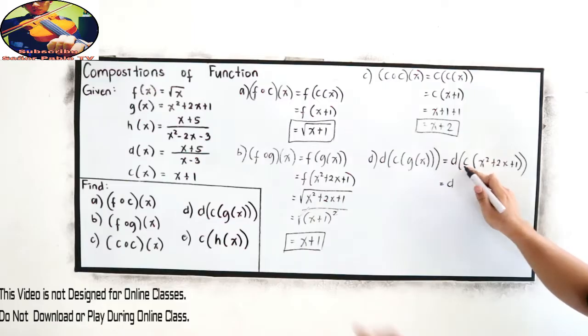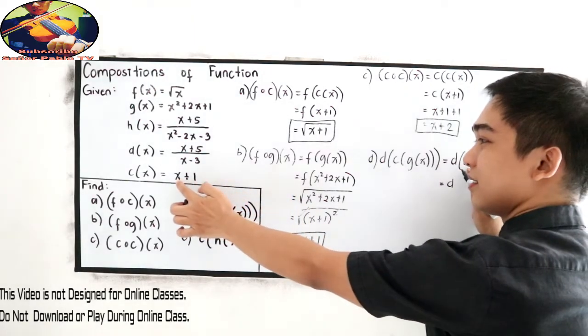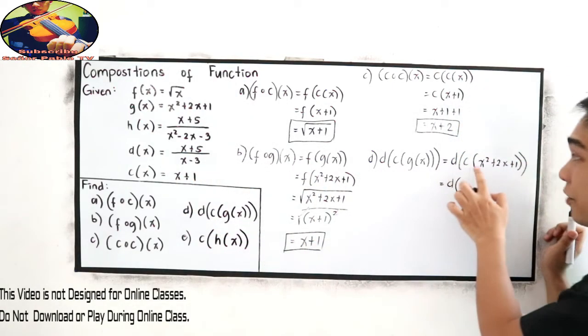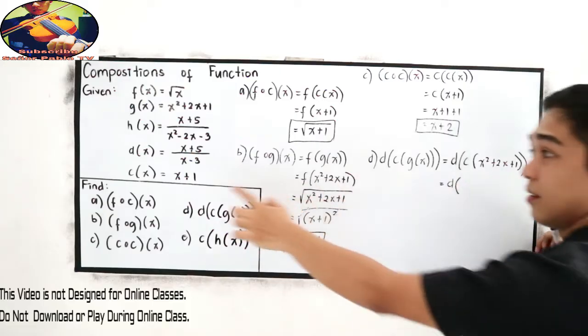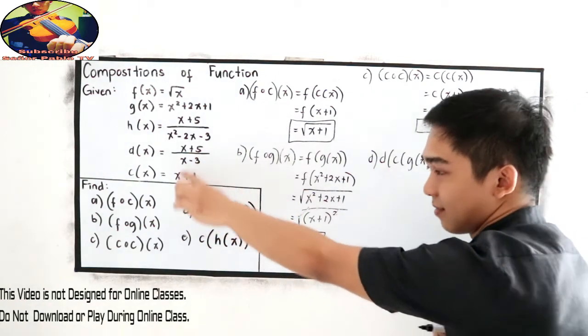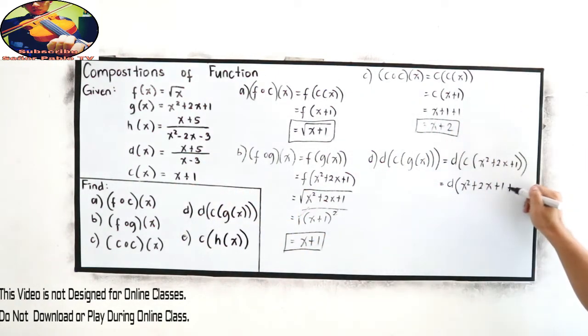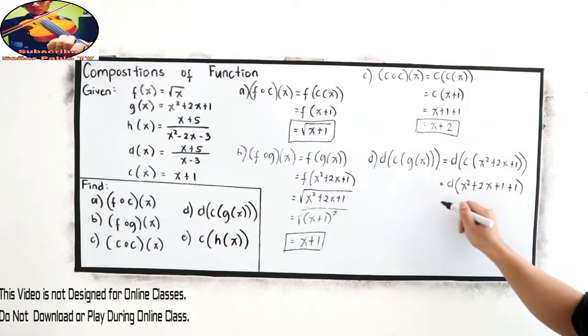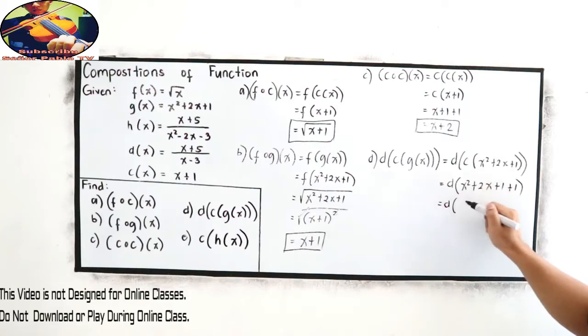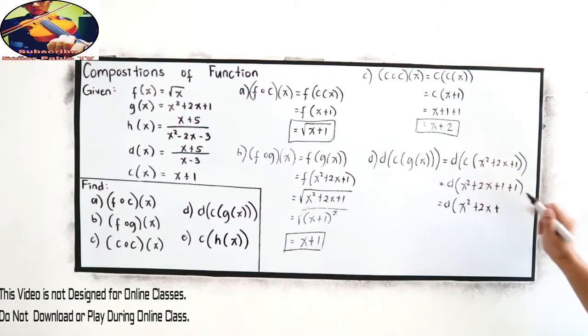D of c of x. Where is g of x? It's here. So, from here, our value of x is x squared plus 2x plus 1. So, x squared plus 2x plus 1. We have 1. So, copy plus 1. Now, combine like terms. c of g of x is equal to x squared plus 2x plus 1 plus 1. That is 2.